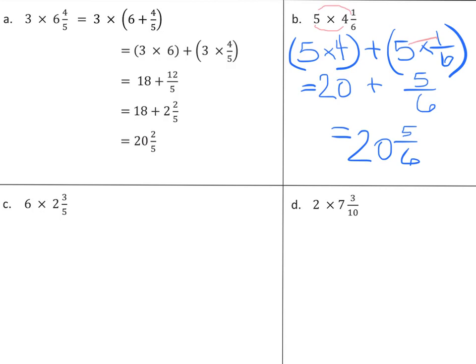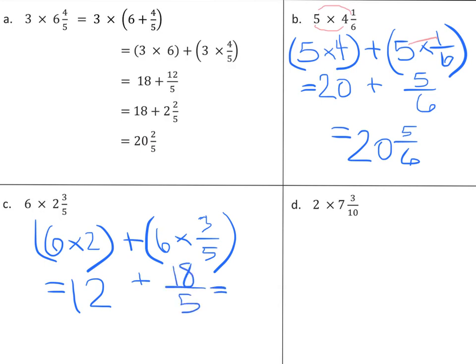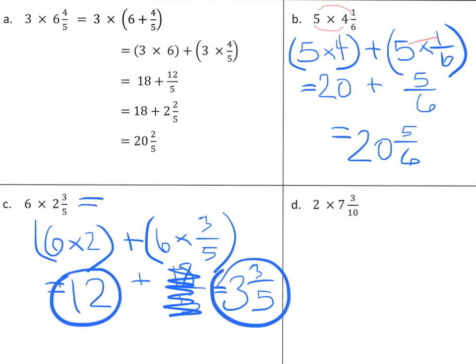Let's try the next one. Six sets of two and six sets of three fifths. Sorry about that, three. So now I'm going to have twelve and I'm also going to have eighteen fifths, which turns into three and three fifths. So this one changed to three and three fifths. I also have a twelve, put them together, and you'll get your total of fifteen and three fifths.